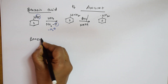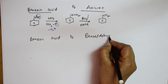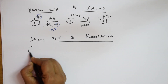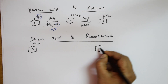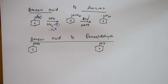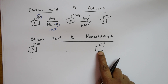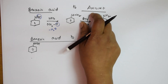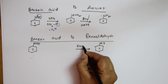Suppose they ask me to convert benzoic acid into benzaldehyde. Benzoic acid is COOH; benzaldehyde is CHO. This is acid, this is aldehyde. The name reaction which prepares benzaldehyde is Rosenmann reduction. I can prepare benzaldehyde using Rosenmann reduction. Rosenmann reduction is used to prepare benzaldehydes — that is the name reaction to remember here.